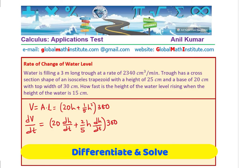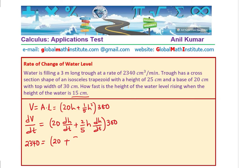Now we need to find dh/dt when height is 15 cm. We know dV/dt which is 2340, which is constant. I will take dh/dt common, times 20 plus 2 fifth of h times dh/dt, and we can divide by 300. So we have an expression which can help us find the rate of change of height at any instance of time.